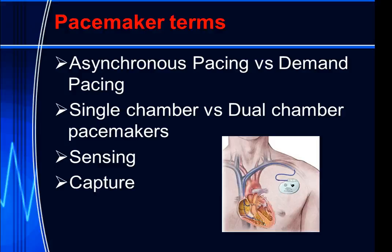A demand pacemaker can actually sense the heart rate. If it's set to pace at 65 beats per minute and it detects the heart is already beating at 65 or 68 beats per minute, it will not generate a pulse. These are very useful for patients who only occasionally have a low heart rate.